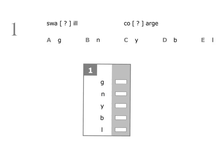Question one. We need to find the letter that will fit into both sets of brackets to complete the words in front of the brackets and begin the word after the brackets. We'll start by looking at the letter G.